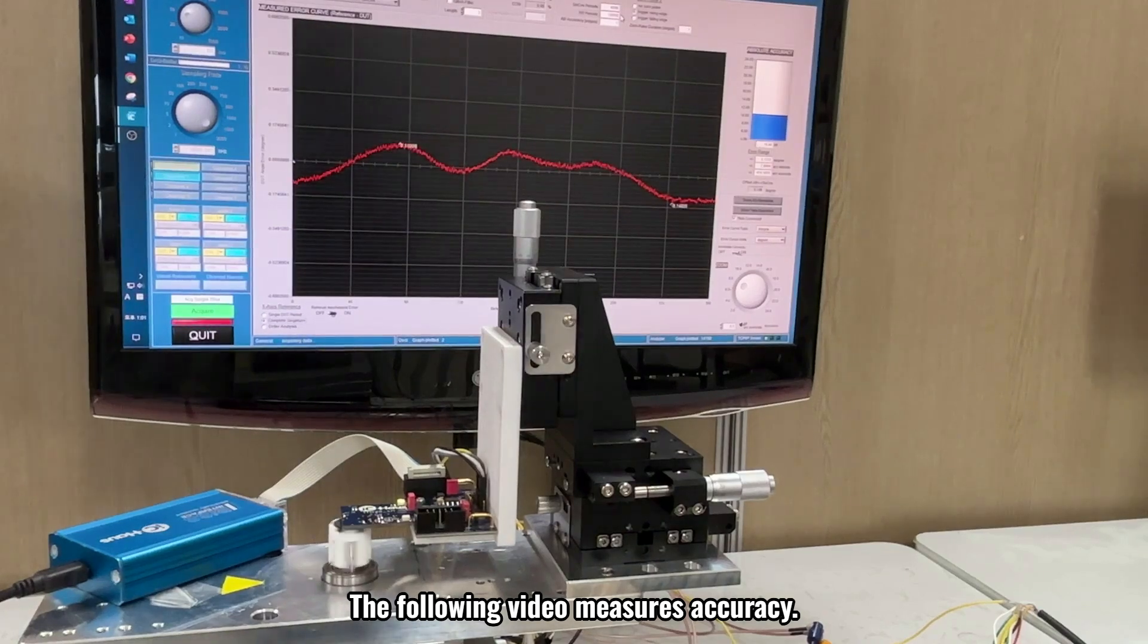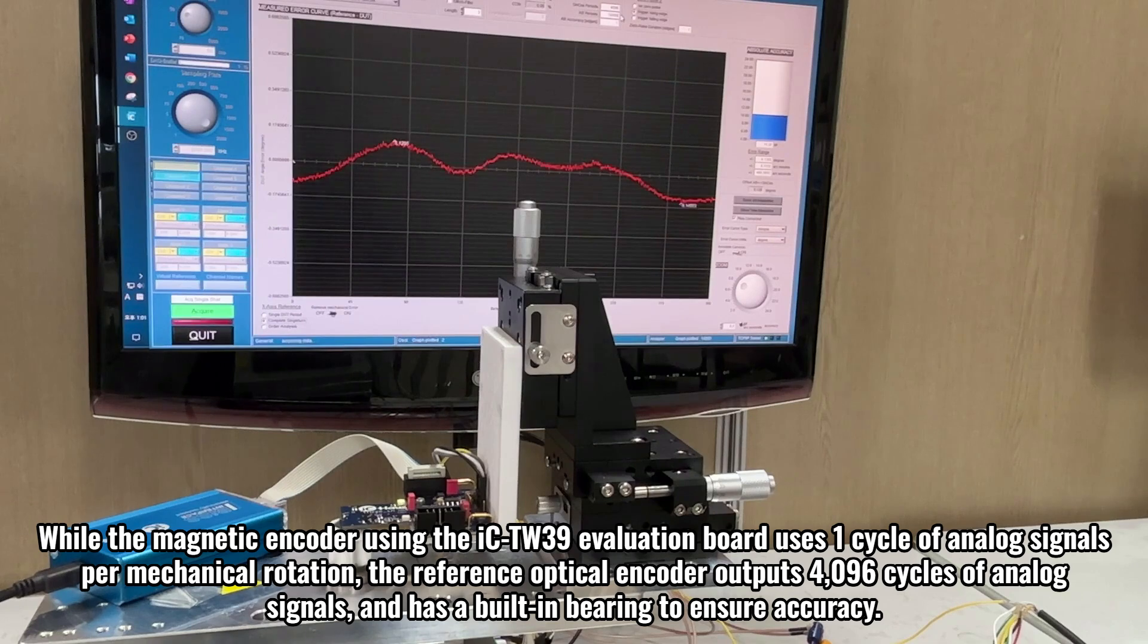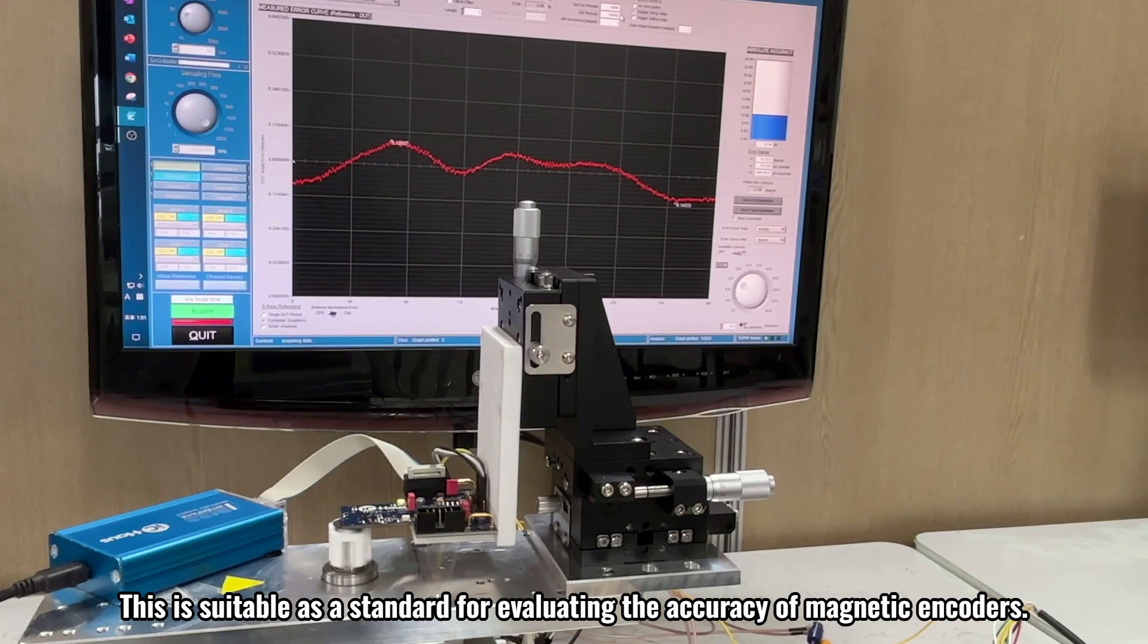The following video measures accuracy. While the magnetic encoder using the IC-TW39 evaluation board uses one cycle of analog signals per mechanical rotation, the reference optical encoder outputs 4096 cycles of analog signals, and has a built-in bearing to ensure accuracy. This is suitable as a standard for evaluating the accuracy of magnetic encoders.